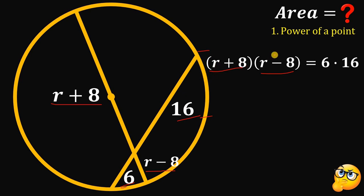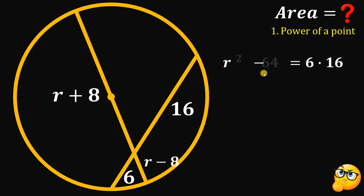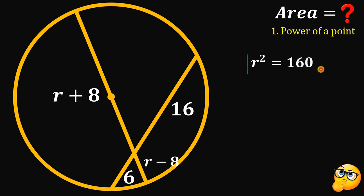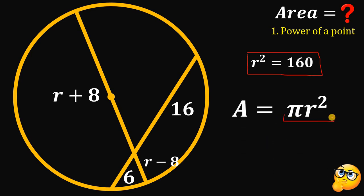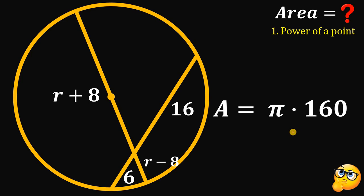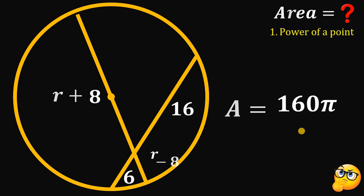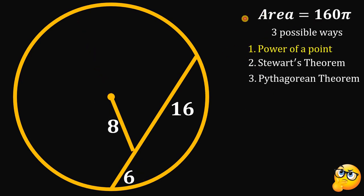So we have (R + 8)(R − 8) = R² − 64. And 6 × 16 = 96. Adding 64 to both sides gives R² = 96 + 64 = 160. Note that the area of the circle is given by πR², so there's no need to find R itself since we already know R² = 160. Therefore, the area of the circle equals 160π square units. Using the Chord-Chord Power Theorem, the area is 160π square units.